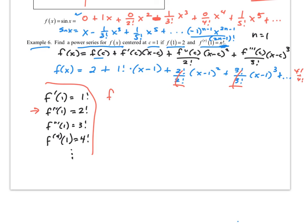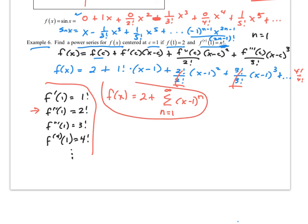Simplifying, we get another approximation that can be written as the sum from n equals one to infinity of x minus one to the n. That's another way to write it. This wraps up section 7.5 on Taylor series, Maclaurin series, and Taylor polynomials. Thanks a lot, take care.